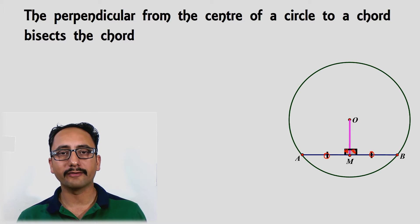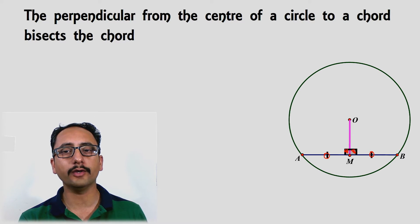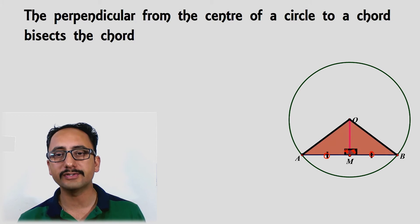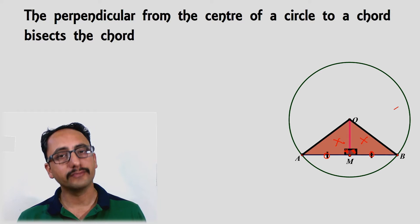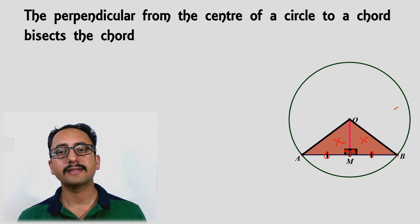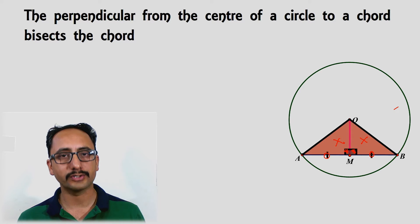How are we going to prove this? We will complete the triangles. We will join OA and OB, and we will prove that these two triangles are congruent. If these two triangles are congruent, by CPCT I can prove that the corresponding sides are equal — hence AM will be equal to MB.